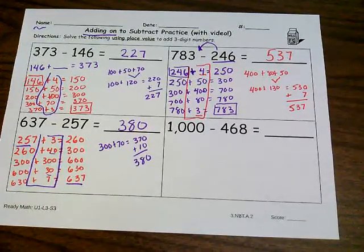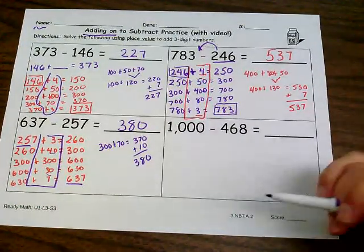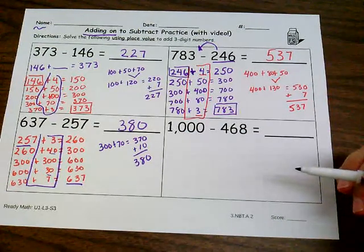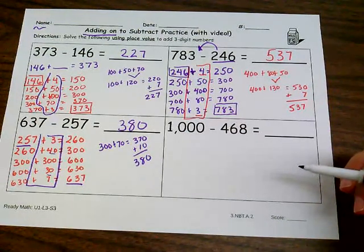Are there any steps that are tripping you up a little bit? And if so, figure out what step it is. Is it when you're adding on the ones? Is it when you're done with the hundreds and have to go back to adding tens and ones? Take a look, compare your work, and then let's move on to this one. So again, I want you to try this one on your own first.